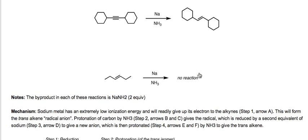And this last example is very important. So once we have a trans alkene, what happens if we add another equivalent of sodium and ammonia? Well, there's no reaction. That is to say that sodium and ammonia will only reduce alkynes and it will not reduce alkenes.